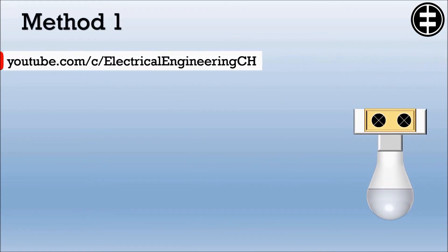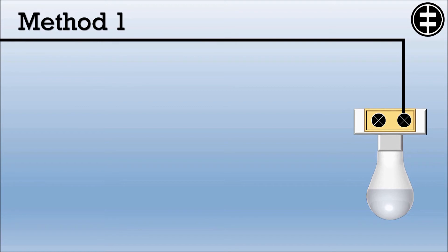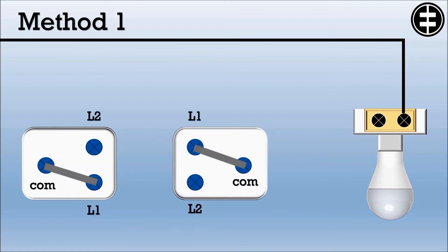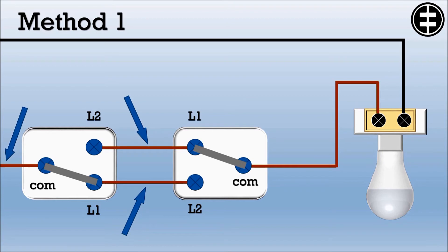For wiring Method 1, the simplest way: connect the bulb's first terminal directly to the neutral wire. Connect the line to the common of the first switch. Connect the bulb's second terminal to the common of switch two. To connect the two switches, connect L1 from switch one to L1 from switch two, and connect L2 from switch one to L2 from switch two.